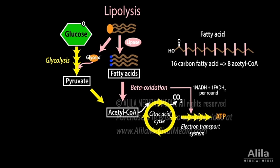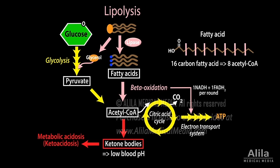Fats yield more energy per unit mass than carbohydrates. When acetyl-CoA is produced in excess, it is diverted to create ketone bodies. During glucose starvation, ketone bodies are an important source of fuel, especially for the brain. However, ketone bodies are acidic, and when produced in excess can overwhelm the buffering capacity of blood plasma, resulting in metabolic acidosis, which can lead to coma and death.